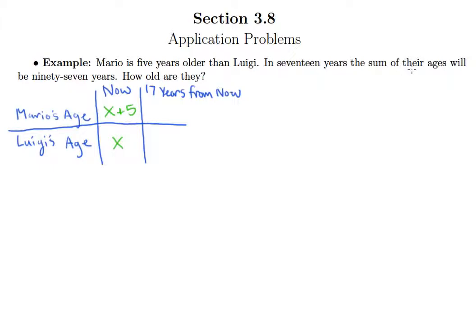Now they give this big long sentence here that tells information about what's happening in 17 years. Well, in 17 years, before we write out an equation, we can write out what their ages will look like, right? If Luigi's age now is x, I think it's pretty clear that in 17 years his age is x plus 17.